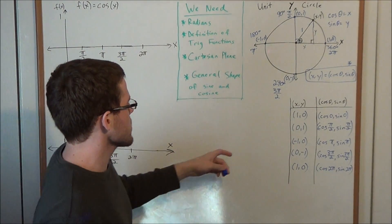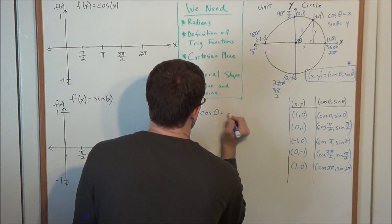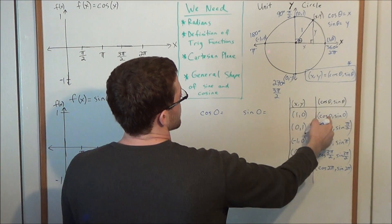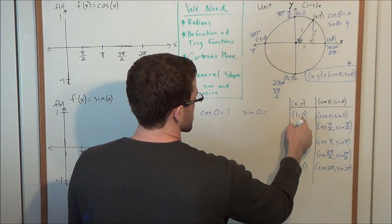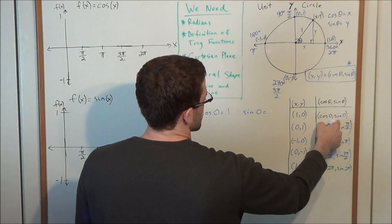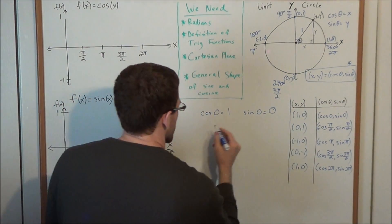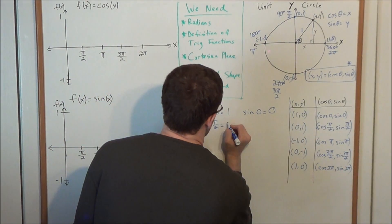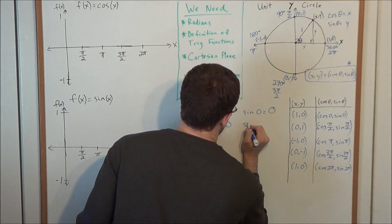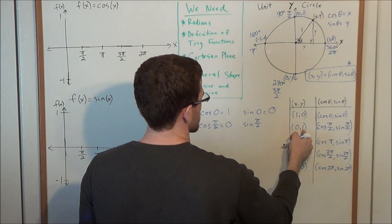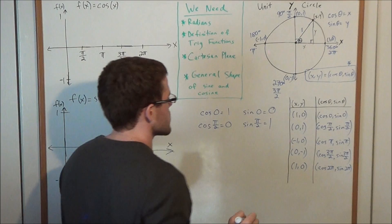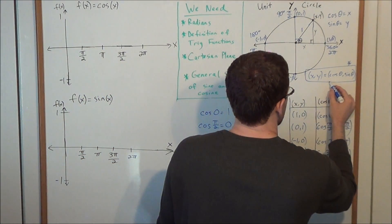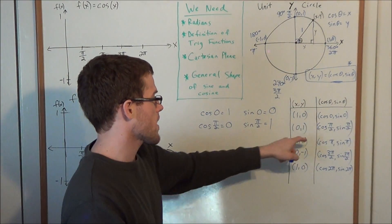So now we can look at particular values of cosine and sine. Cosine corresponds to the x coordinate, and sine corresponds to the y coordinate. Cosine of 0 equals 1, and sine of 0 equals 0. Cosine of pi over 2 has corresponding x coordinate equal to 0, and sine of pi over 2 corresponds to the y coordinate which equals 1. This allows us to evaluate particular values of cosine and sine at those particular angles.